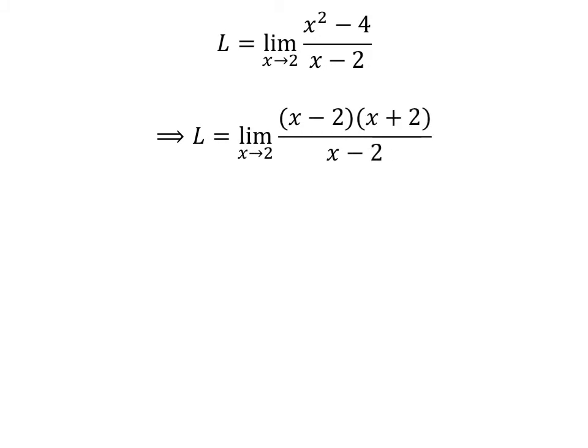In the numerator, x squared minus 4 can be factorized as (x minus 2) times (x plus 2). Now, let us cancel out the common factor x minus 2 in the numerator and the denominator.